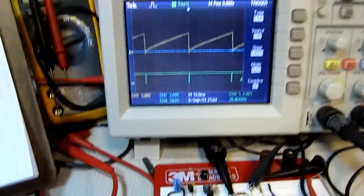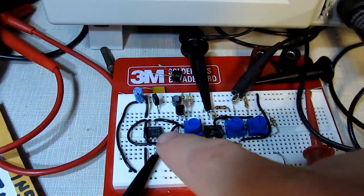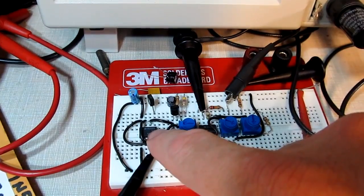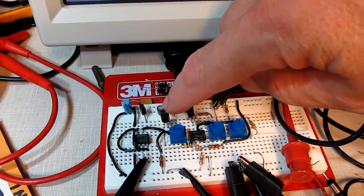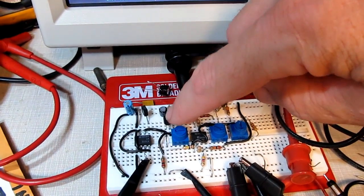And the construction of it, I just put it up on a breadboard here. There's the 555 timer. This is the capacitor that we're charging with the current source transistor, which is that guy right there.